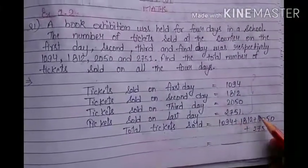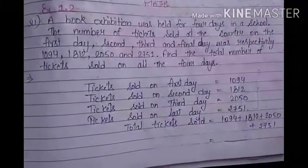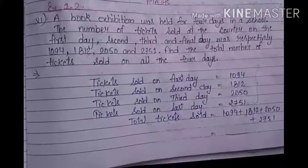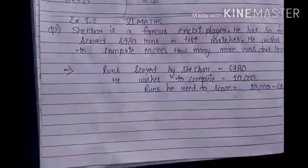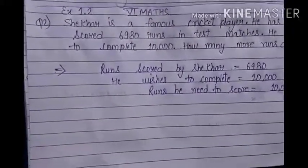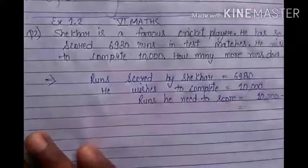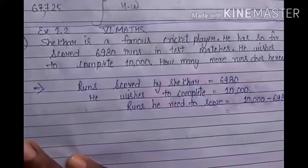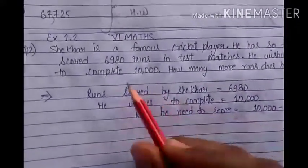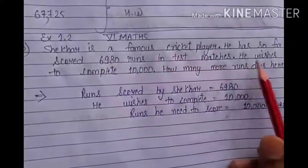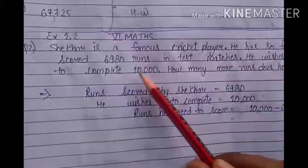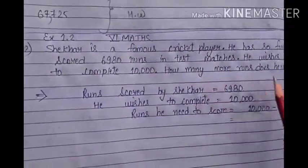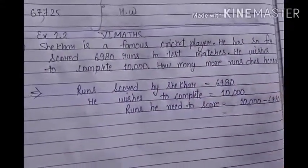This is your homework — you have to add these 4 numbers and come to your answer. Question number 2: Shaker is a famous cricket player. He has so far scored 6980 runs in test matches. He wishes to complete 10,000. How many more runs does he need?